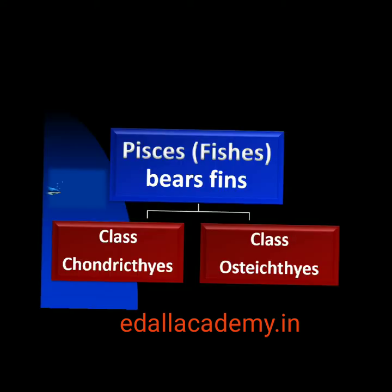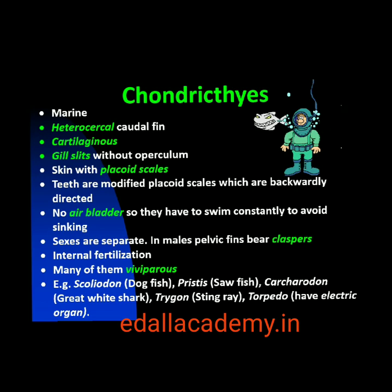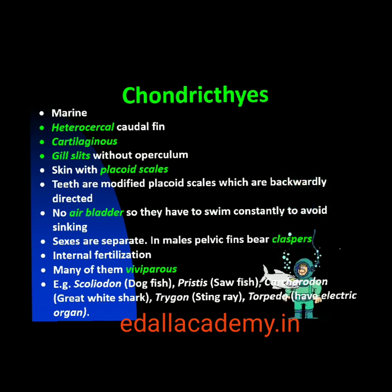Second is class Chondrichthyes. They are marine animals with a streamlined body and have cartilaginous endoskeleton. Mouth is located ventrally. Notocord is persistent throughout life. Gill slits are separate and without operculum. The skin is tough, containing minute placoid scales. Teeth are modified placoid scales which are backwardly directed. Their jaws are very powerful and these animals are predacious. Due to the absence of air bladder, they have to swim constantly to avoid sinking. Heart is two-chambered — one auricle and one ventricle.